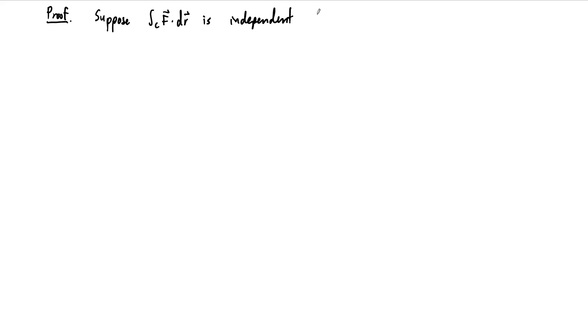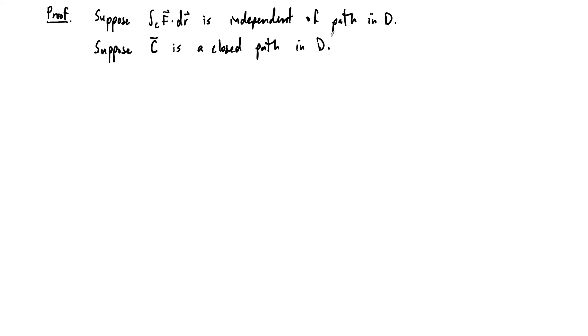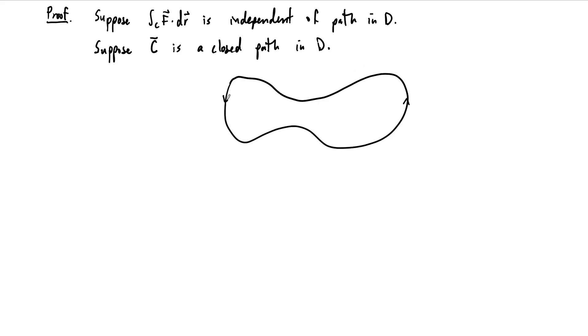For our proof I'm going to do one direction and then the other direction by analogy. First, let's suppose that our path integral of f dot dr is independent of path in d. Furthermore, let's suppose that we have a closed path in d — call it c hat — which is a closed path in d. This theorem has to apply to every closed path c hat that's contained in d, whatever d is.